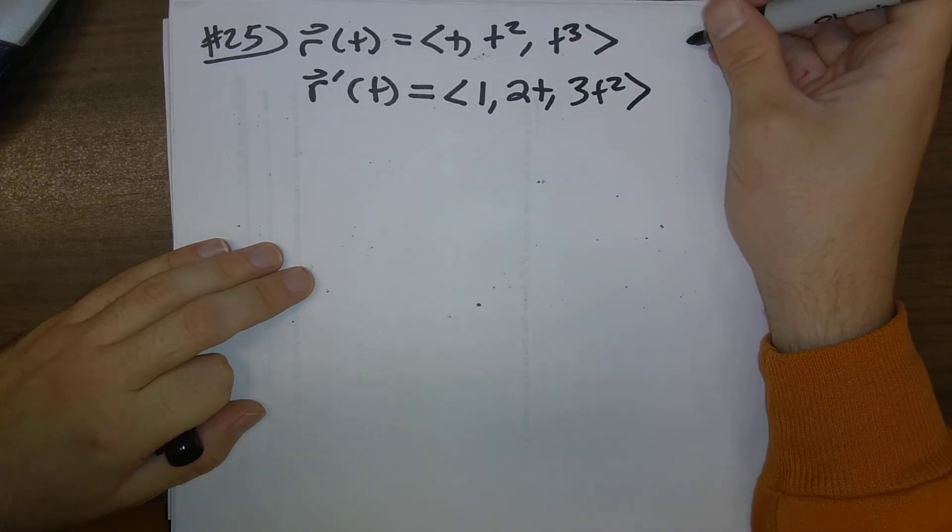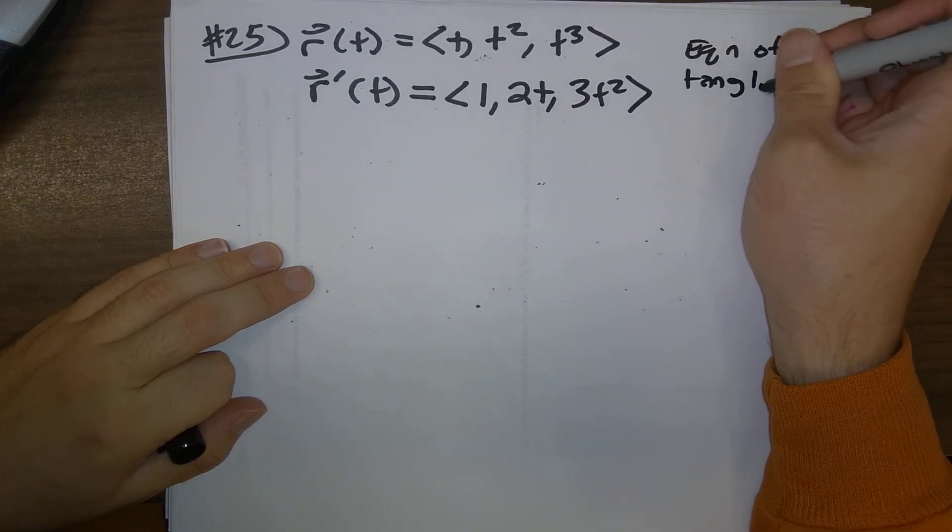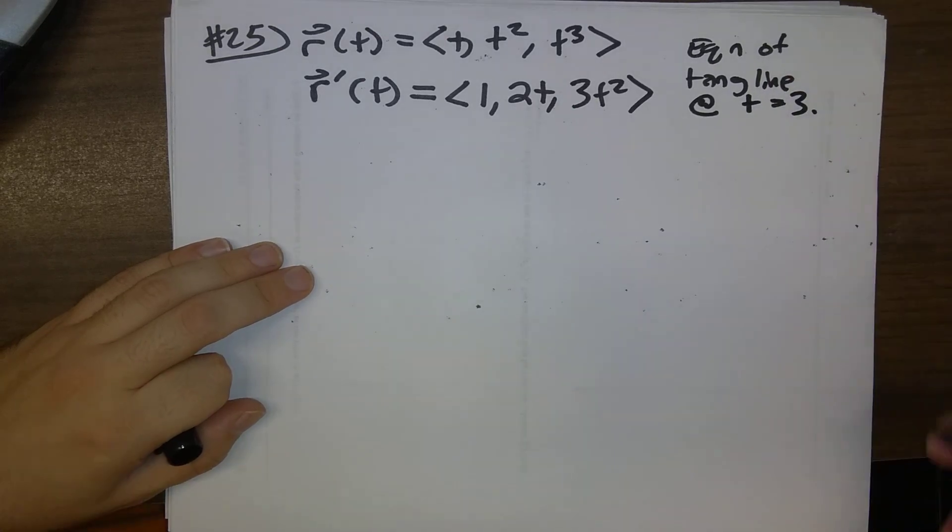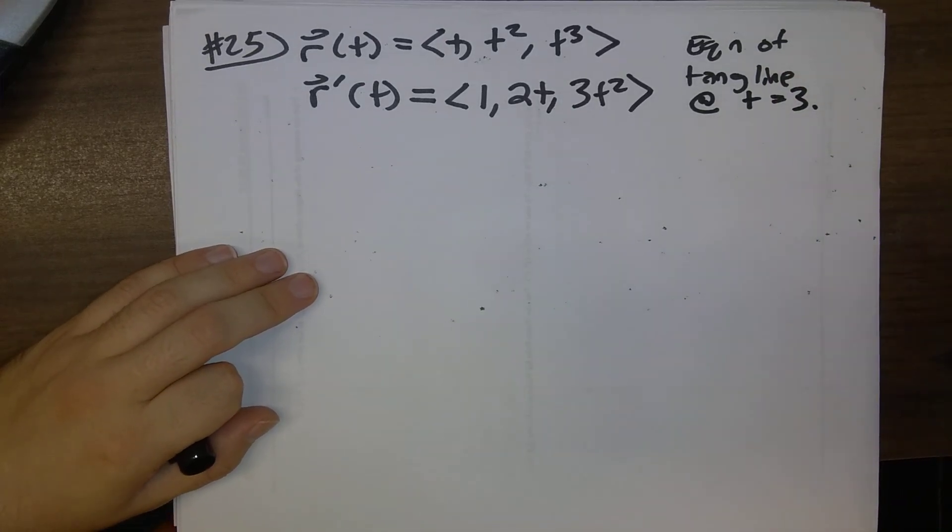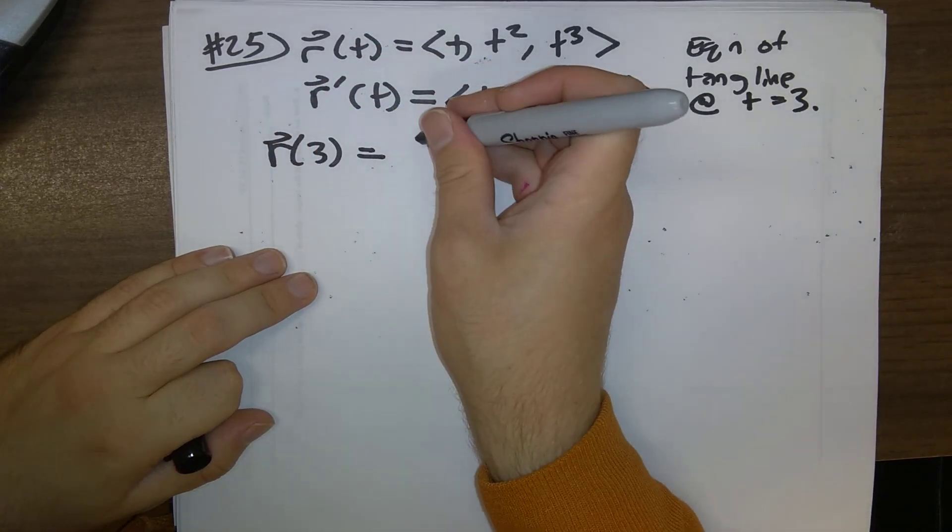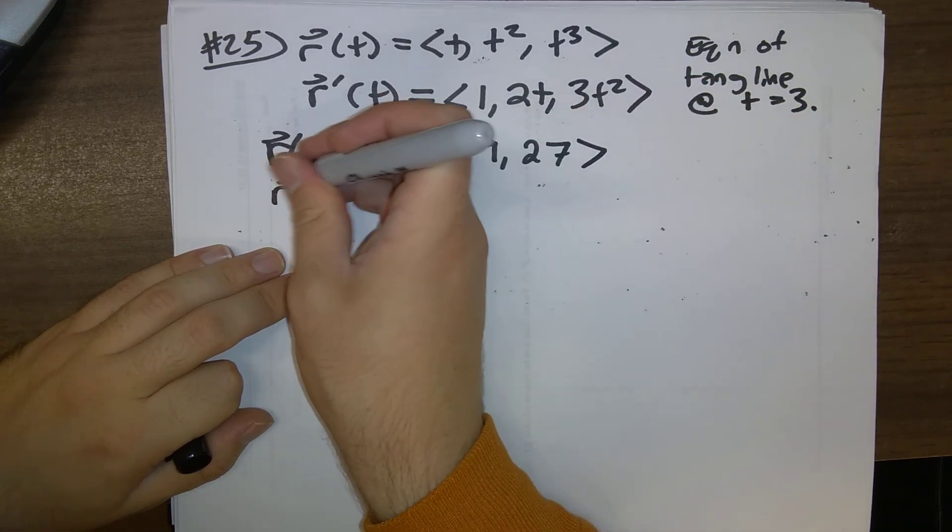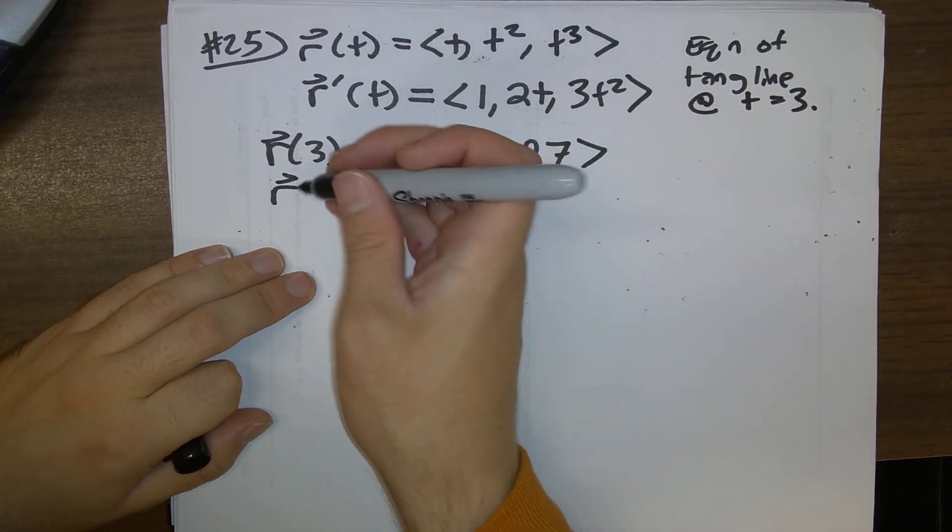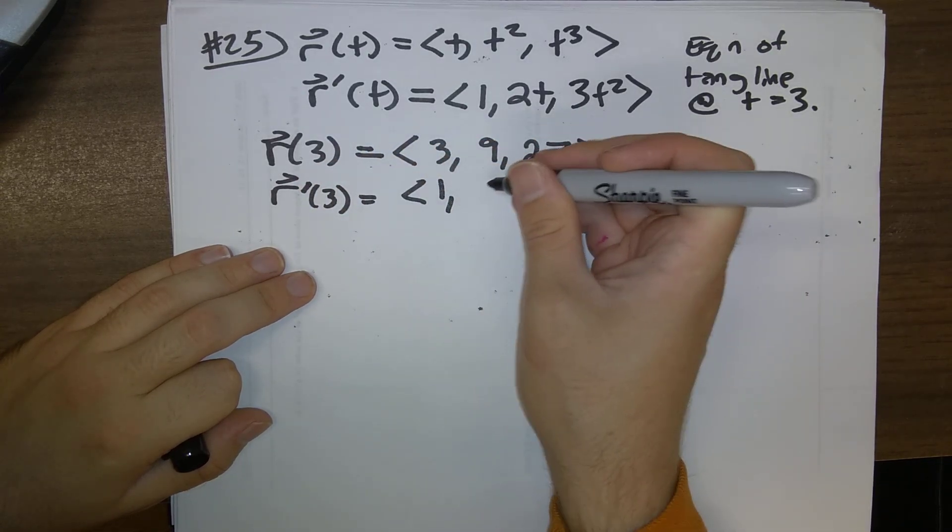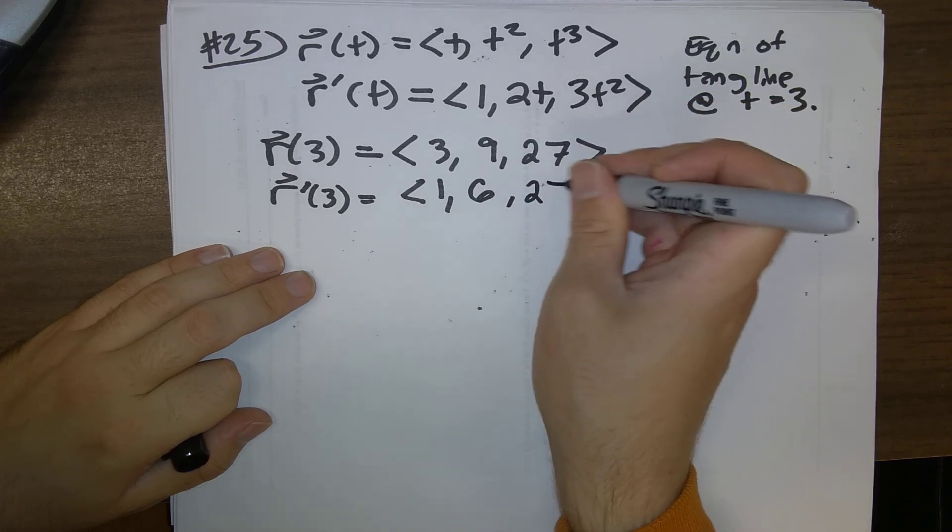We want equation of tangent line at time t equals 3. So, for this, we need to calculate both r of 3. r of 3 is 3, 9, 27. I just plug that into r of t up here. r prime of 3 is 1, 2 times 3 is 6, 3 times 3 squared is 27.